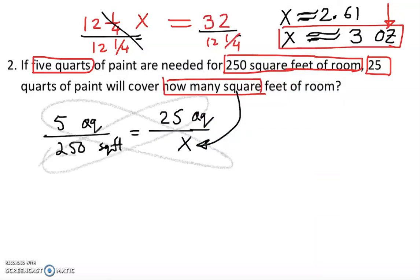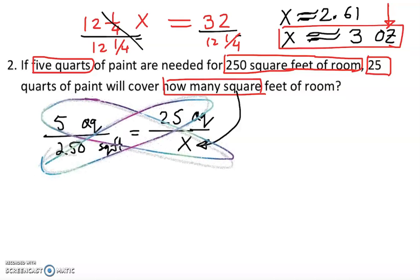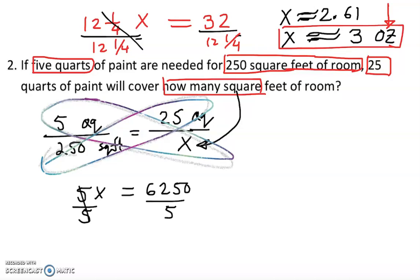We can cross multiply just like that. So 5 times x equals 250 times 25, which gives 6250. We are looking for square feet — quarts cancel out on the top. Divide both sides by 5, and x equals 1250 square feet.